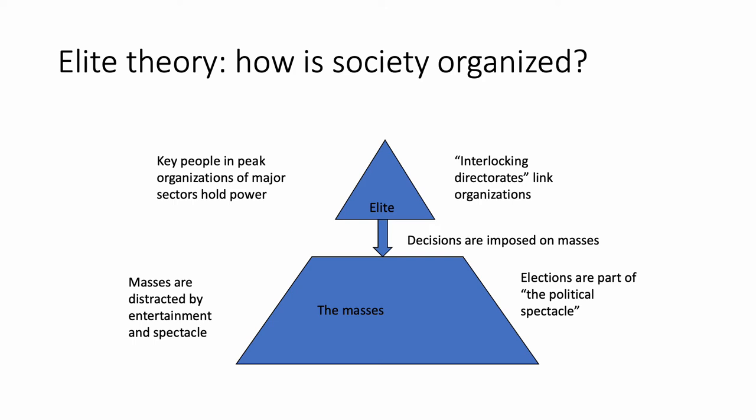Elite theory says these connected elites actually influence the decisions that get made, and those decisions are imposed on the masses. And what are we doing? Elite theorists would say we are mostly distracted — watching movies, TV shows, reality TV, obsessing about who wins the lottery. Every now and then elections happen, and there's a very expensive spectacle. In the view of elite theorists, it's a pageant put on to convince us we're really making the decisions. The elections are part of a political spectacle put on for our benefit to make us think the government cares about us — when in reality, all we're doing is legitimizing the decisions imposed on us by elites.